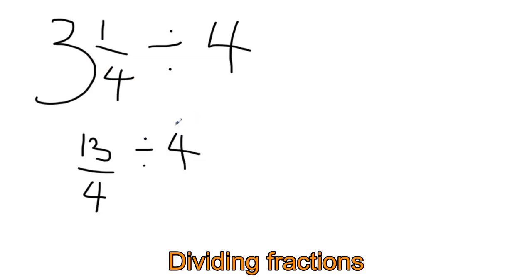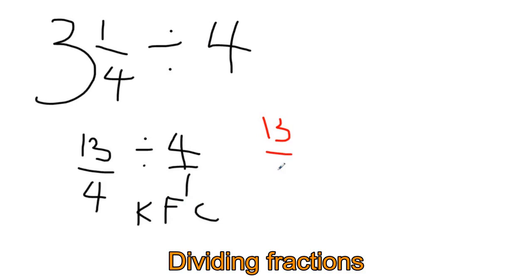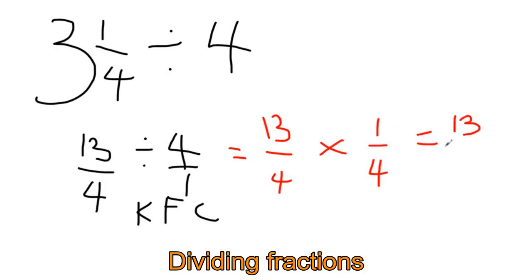Now we can use our KFC. We keep the first fraction, which is 13 over 4, we flip the second one, and we change the divide to times. Now we multiply the top and multiply the bottom, and that is the answer to this question.